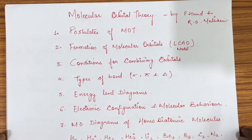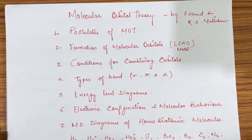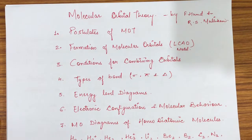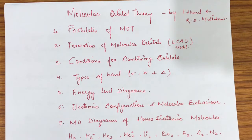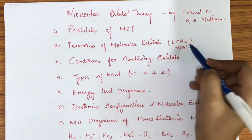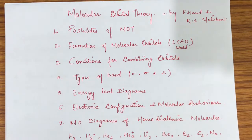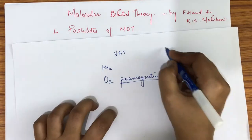Now we start Molecular Orbital Theory. First we will discuss the topics we will learn. We will cover the MOT postulates — the salient features that made this theory and the key points to understand it. Then we will learn about the formation of molecular orbitals, that is the Linear Combination of Atomic Orbitals.